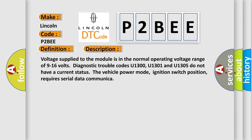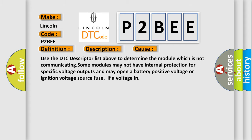This diagnostic error occurs most often in these cases. Use the DTC descriptor list above to determine the module which is not communicating. Some modules may not have internal protection for specific voltage outputs and may open a battery positive voltage or ignition voltage source fuse if a voltage input occurs.